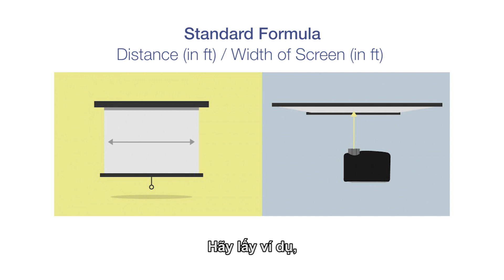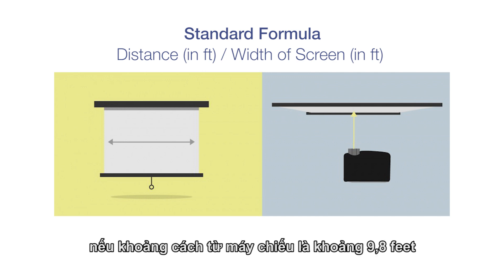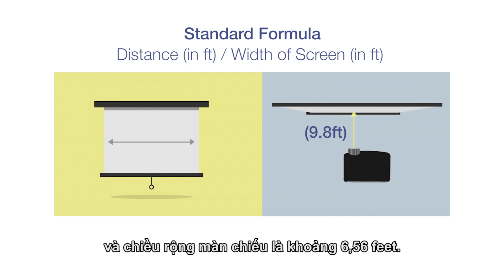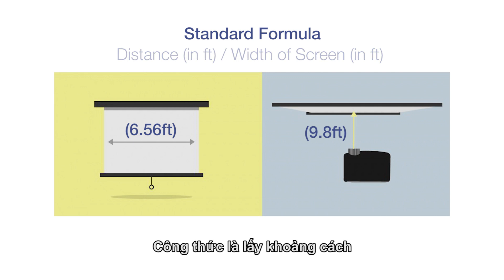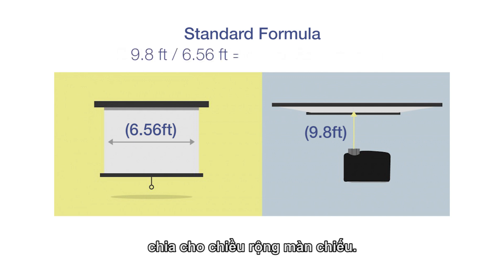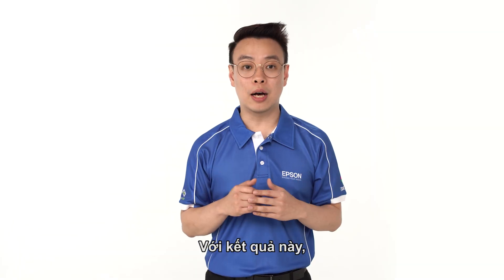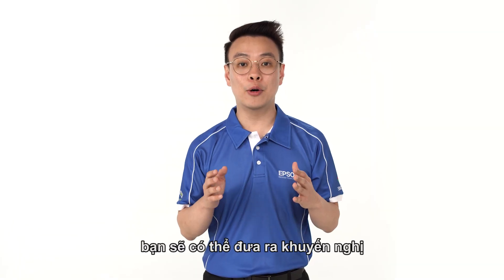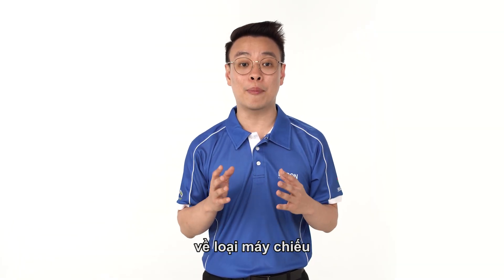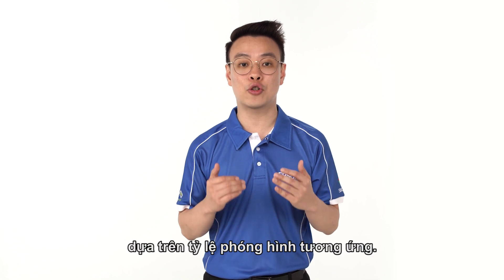For example, if the distance from the projector to the screen is about 9.8 feet and the width of the screen is about 6.56 feet, you take the distance divided by the width of the screen. Based on this calculation, you will achieve a throw ratio of 1.49. With this result, you will be able to make recommendations on the type of projector based on the respective throw ratios.